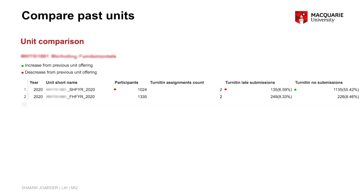I also have a compare past units feature. I was trying to find a way to benchmark any unit, so conveners can compare their current unit with past units. They can compare participants — whether enrolment has increased — how many turnitin assignments have been used, and how many late or no submissions were made. For example, there's a visible drop in late submissions and an increase in no submissions in one comparison. This is a starting point for unit comparison, and I'll keep adding to this report to make it more useful.